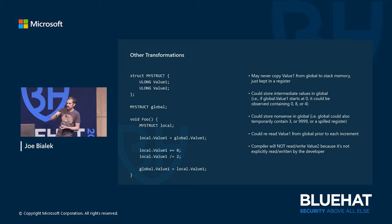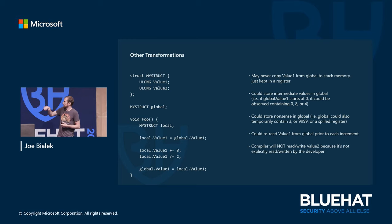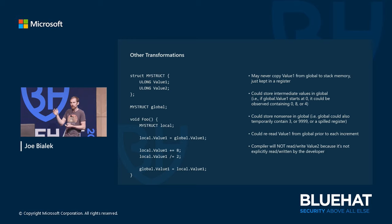As a counter-example: one thing the compiler would not be allowed to do is mess with the value two field, because your code is not accessing it. As far as the compiler is concerned, that may be unmapped memory with no guarantee it's accessible. The only reason the compiler is allowed to do all these optimizations to the other fields is because your code is unconditionally already reading and writing to that memory — so the compiler can assume that memory is fair game, since it's clearly mapped.